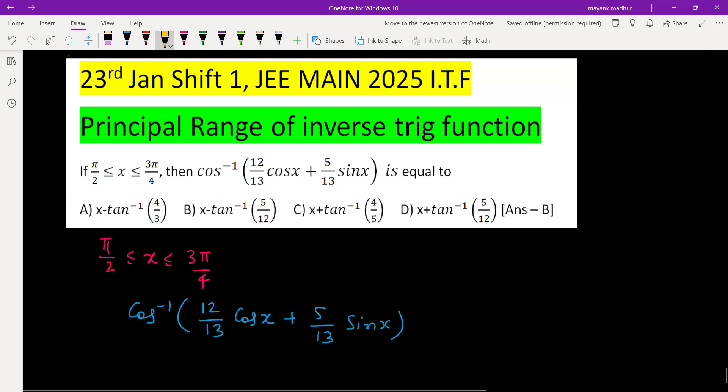And we know that cos inverse cos θ is equal to θ only when θ lies in the principal range of cos x, that is 0 to π. So we need to bring this expression in terms of cos.